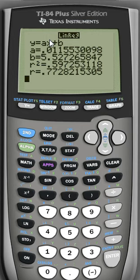If we were to round these to four decimal places, the value for A would be 0.0116, and the value for B would be 5.5273. So plugging those into these coefficients, the line of the regression equation would be y equals 0.0116x plus 5.5273.